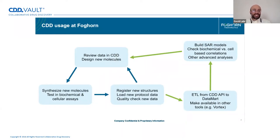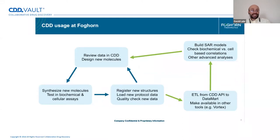We have made an outline of a feedback loop — pretty basic to drug discovery everywhere. At the top, it starts with chemists reviewing the data loaded into CDD and designing new molecules. These molecules get synthesized and then tested in biochemical and cellular assays. The synthesis and testing happens both in-house and at CROs in a lot of different locations. But all that data ends up back in CDD — one central place to find that data. Then the cycle starts again with chemists reviewing new data and designing a new set of molecules.